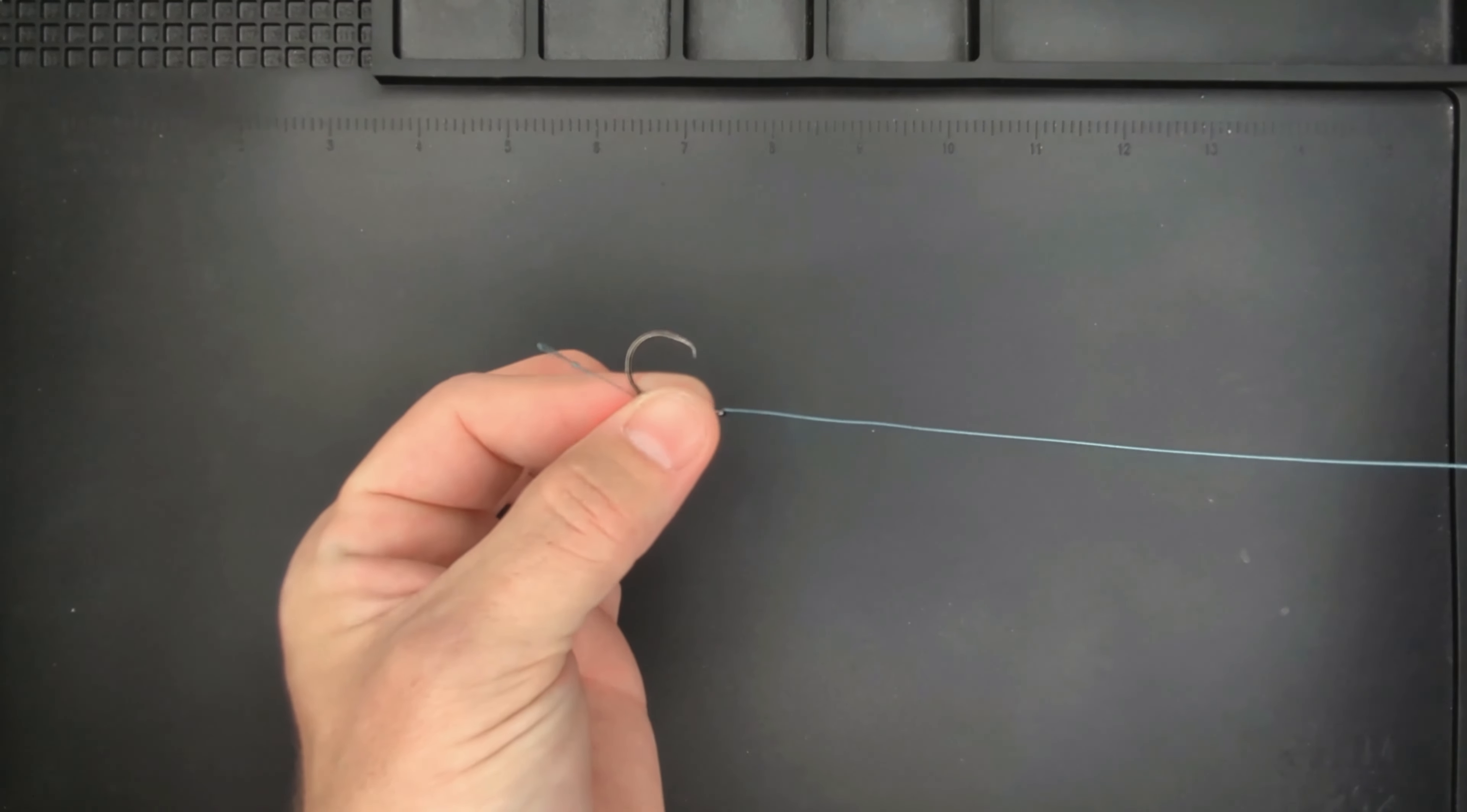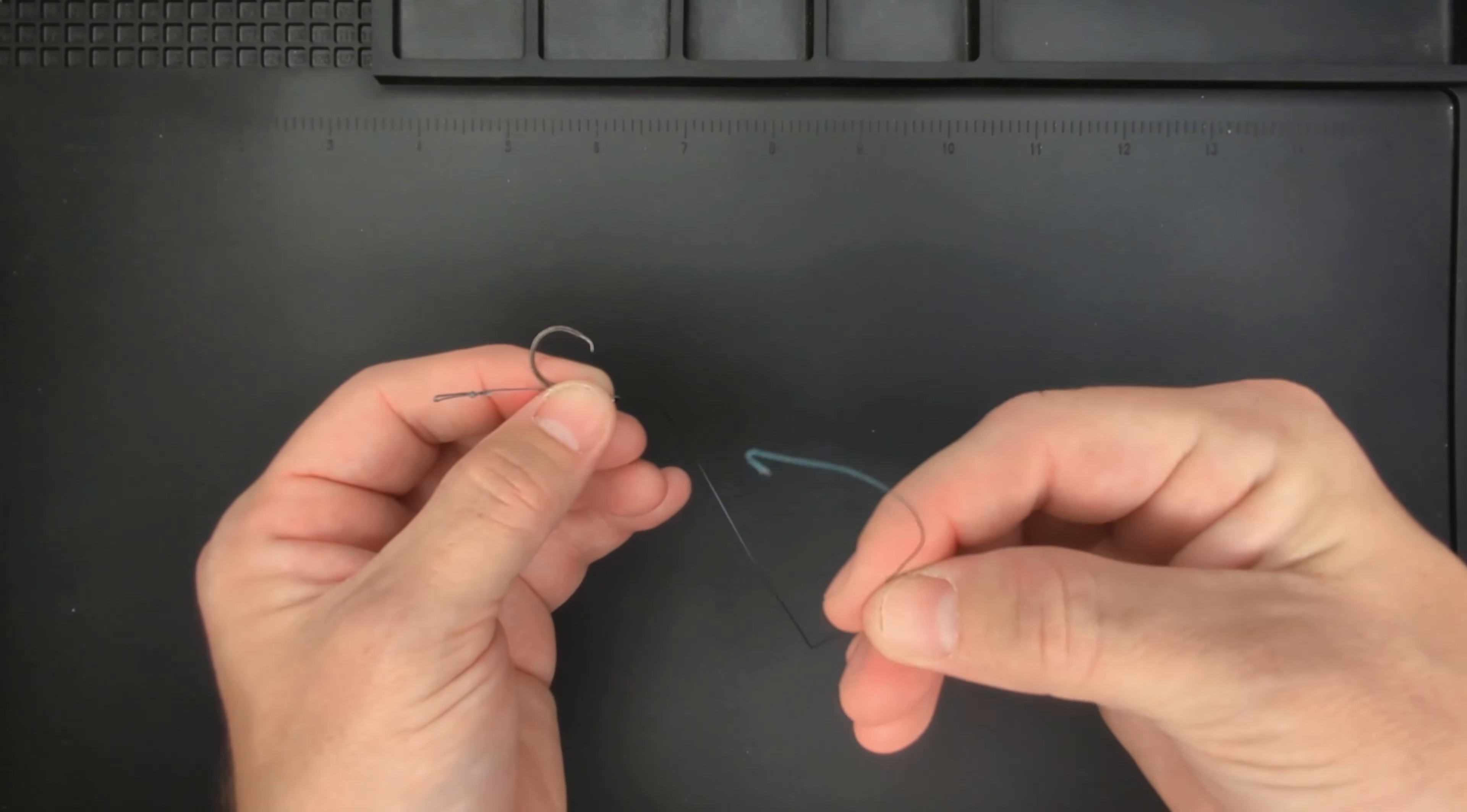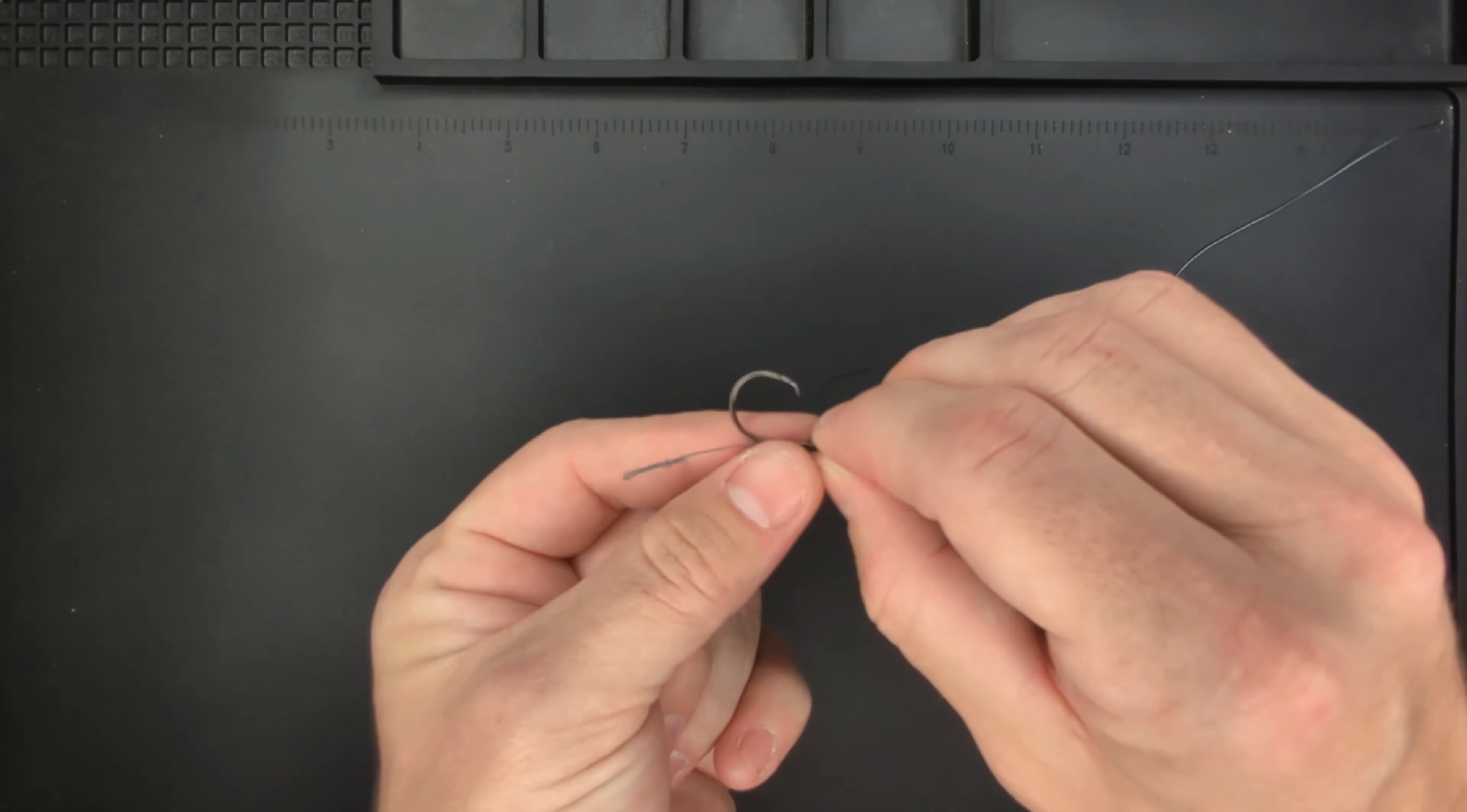So that's all it takes to tie a hair rig. As you can see it's very simple, only takes a few minutes. This end will be attached to your swivel on your main line and your bait is going to go on your hair right here.